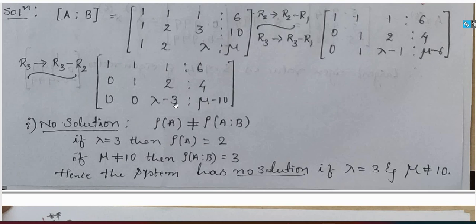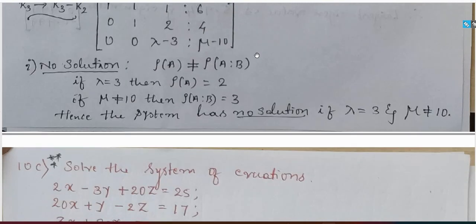For infinitely many solutions, rank A should equal rank of the augmented matrix, but it should be less than the number of unknowns. So lambda equal to 3 and mu equal to 10 gives infinite solutions. Then the rank of the matrix is 2, which is less than the number of unknowns, which is 3. That is the solution for unique and infinitely many solutions.